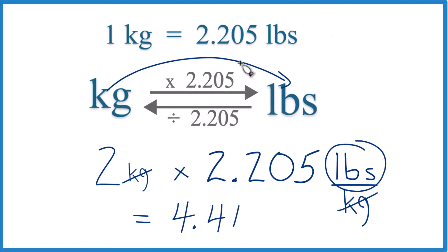and we're looking for pounds, that's all that's left here. So 4.41 pounds. When we convert 2 kilograms to pounds, we get 4.41 pounds.